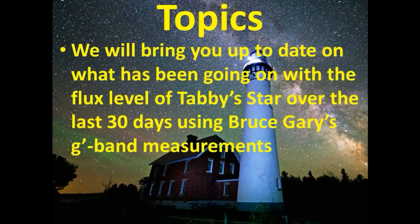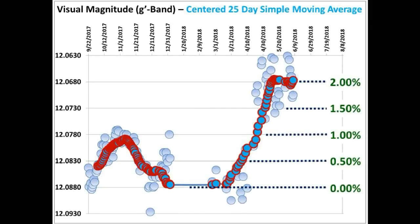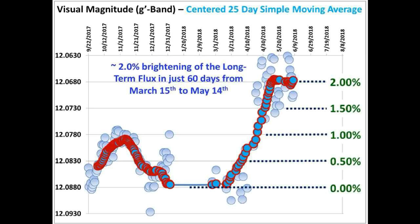Hey guys, we have a quick update. We will bring you up to date on what has been going on with the flux level of Tabby's Star over the last 30 days using Bruce Gary's g-band measurements. Last time we updated you, this was the g-band centered 25-day simple moving average of the long-term light curve of Tabby's Star as of June 7th, 2018, and we showed a flattening off of the light curve after an approximate 2% brightening in just 60 days that occurred from March 15th to May 14th of 2018.